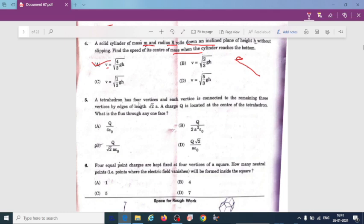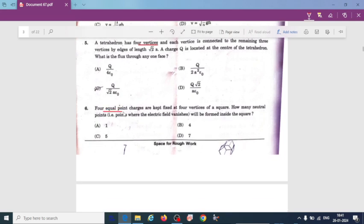A tetrahedron has 4 vertices. 4 equal point charges are kept fixed at 4 vertices of square. That means it is a quadrupole. If we consider 4 equal and opposite charges, that means it acts as a quadrupole. How many neutral points, that is points where the electric field vanishes, will be formed inside the square. So what the correct option here is option C, 5. 5 neutral points will be formed inside the square.